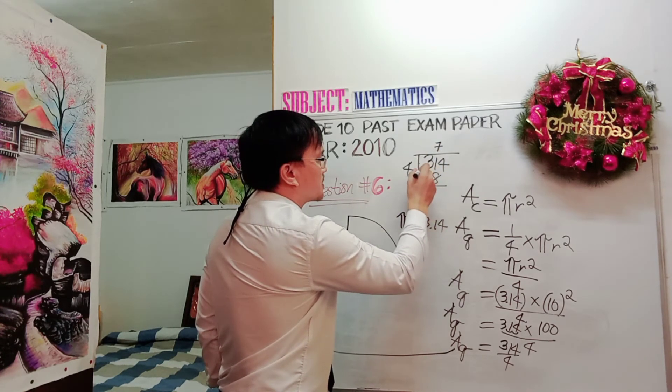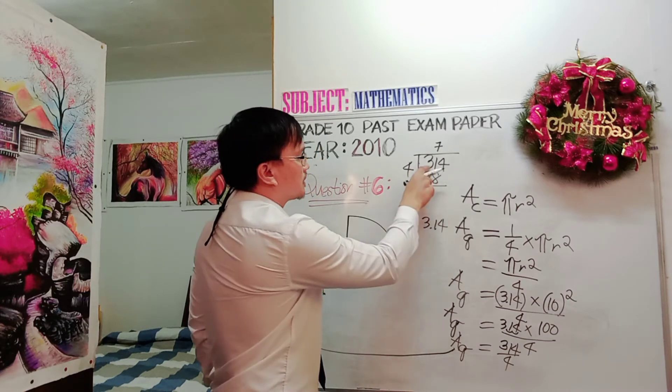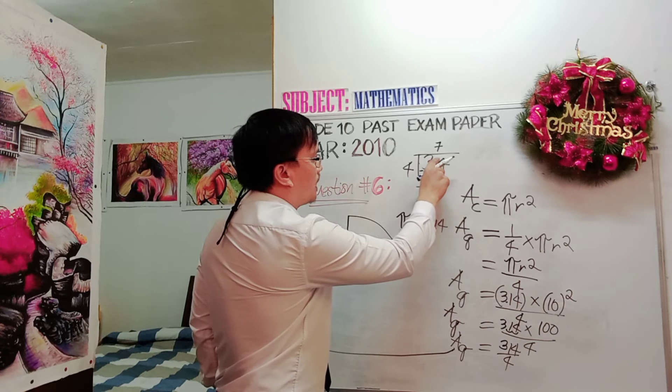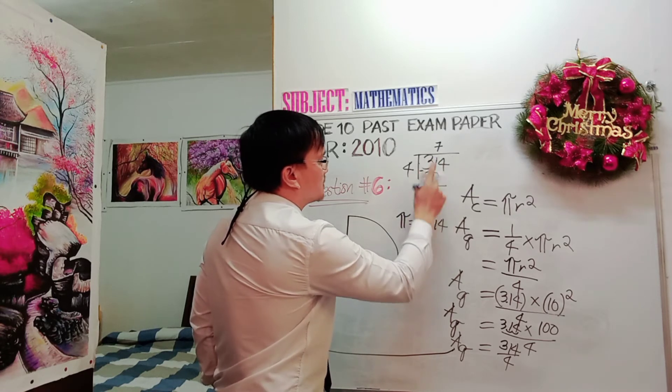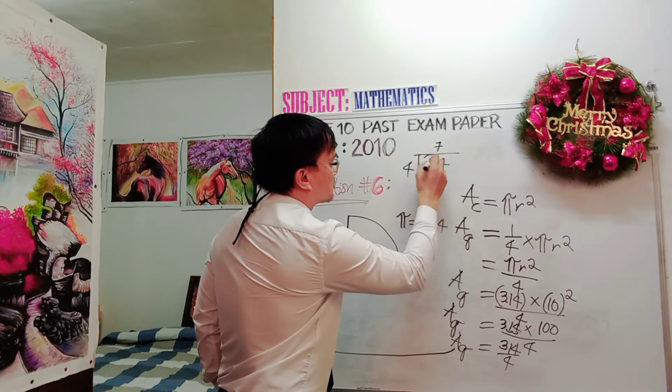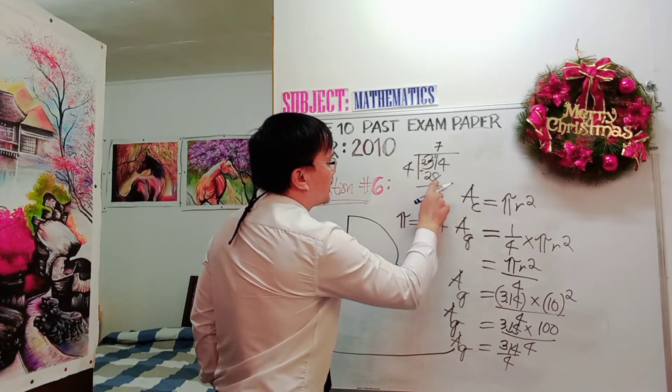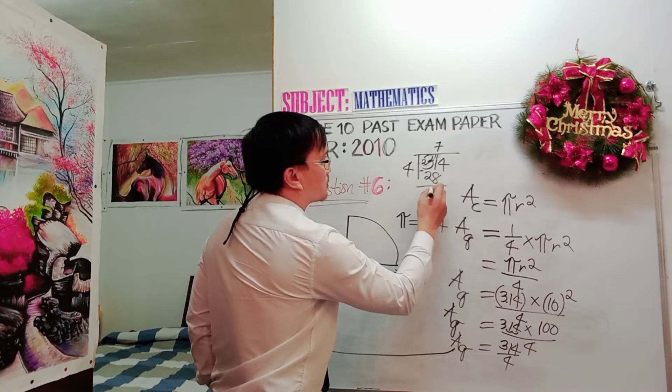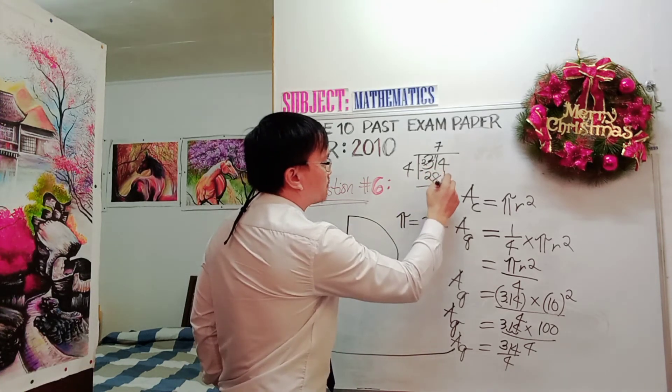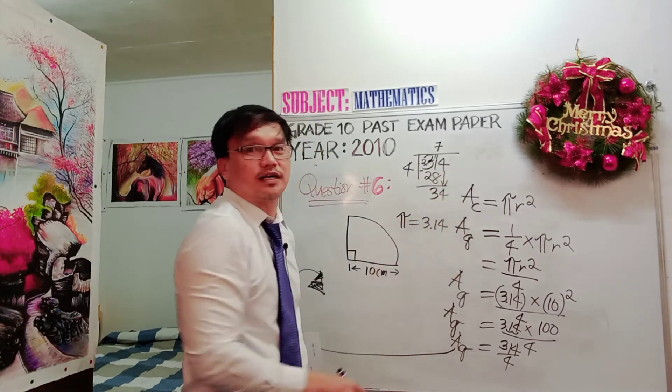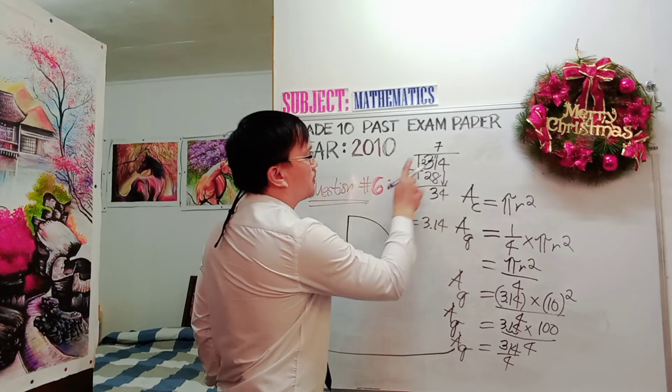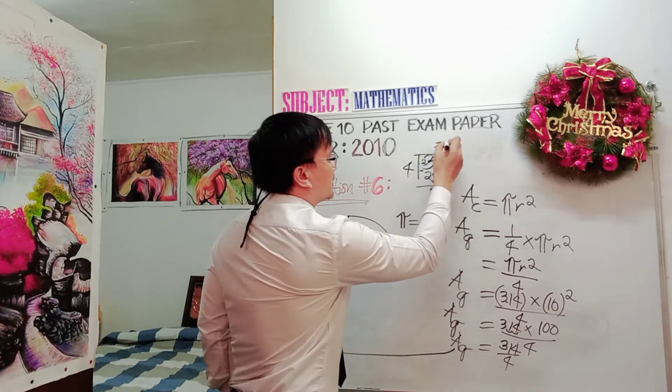The operation here is minus. So 31 minus 28 or 1 minus. So this 1 becomes 11. This 3 becomes 2. 11 minus 8 is equal to 3. Bring down this 4. So you have now 34. 34 divided by 4 is 8.